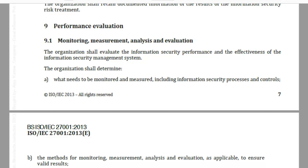As part of ISO 27001:2013, we are required to create information security objectives at different levels and functions within the organization. These information security objectives will serve the purpose of showcasing the effectiveness of the ISMS and the overall performance of information security, and should be able to assess information security processes and controls. Once the organization has determined what will be monitored and measured, the method associated with monitoring, measurement, analysis and evaluation shall also need to be established.